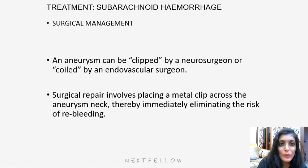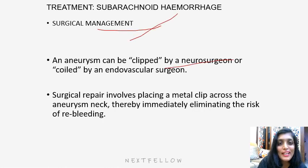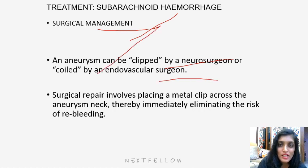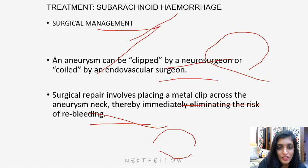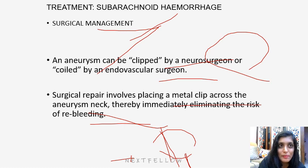Treatment of subarachnoid hemorrhage is mostly surgical and it is an emergency. An aneurysm can be clipped or coiled. Coiling is done endoscopically; clipping is done by a neurosurgeon. Surgical repair involves placing a metal clip across the aneurysm neck, thereby eliminating the risk of re-bleeding.